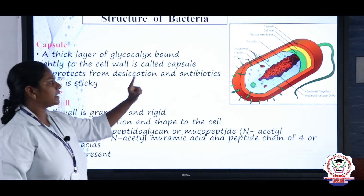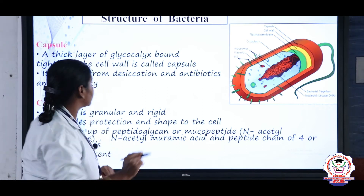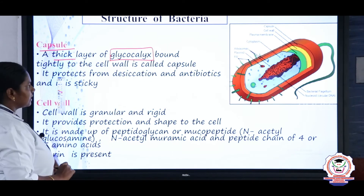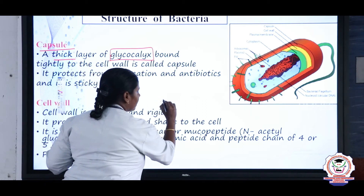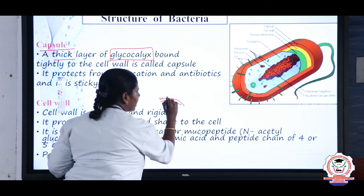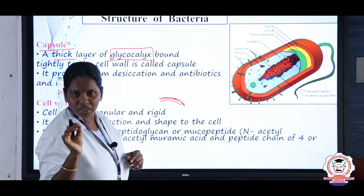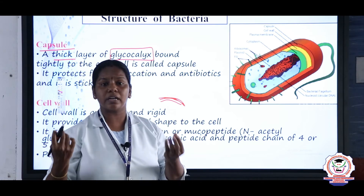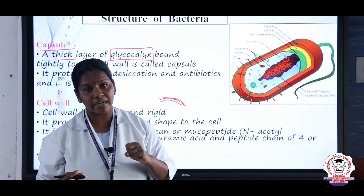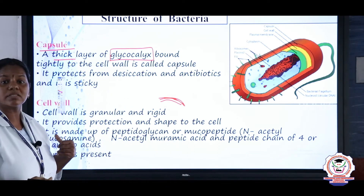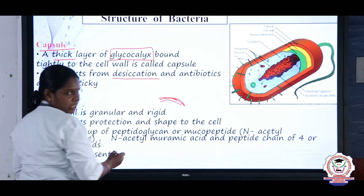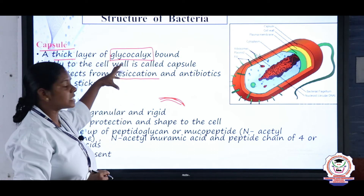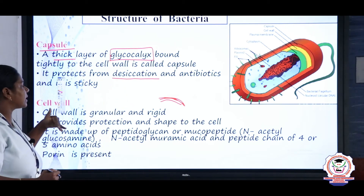The capsule is the outermost layer of the bacterial cell. It is thick and made up of a substance called glycocalyx. The capsule is very sticky in nature, allowing it to easily attach to intestines, teeth, and tissues. This sticky nature helps in attachment, and the capsule also protects the organism from desiccation — meaning it prevents the bacterium from being destroyed.